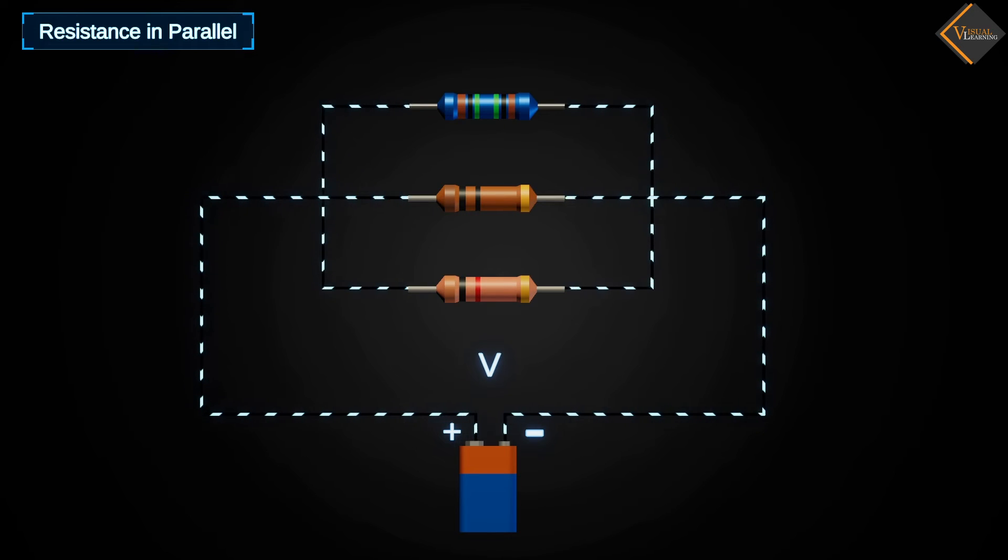The resistance of these three resistors is labeled as R1, R2, and R3. When we apply voltage to the circuit, current flows through all three resistors, but it is divided among them. Let's call these currents I1, I2, and I3.